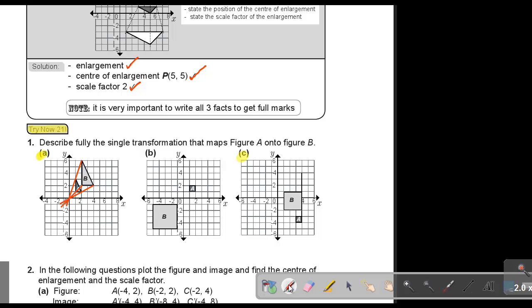So we can see that the center will be at the origin, and we can now find. So, okay. We're going to start by saying, okay, this is try now 21, and this is number A. So we are going to say, first, it's an enlargement, one point.